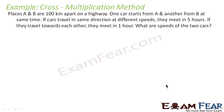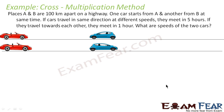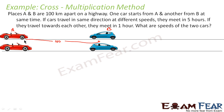Let us visualize this situation. This is point A and this is point B — two points. Point A and point B are 100 km apart. If you see the distance between these two points, this distance is 100 km.